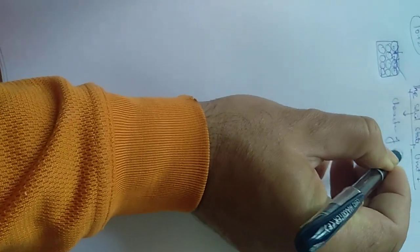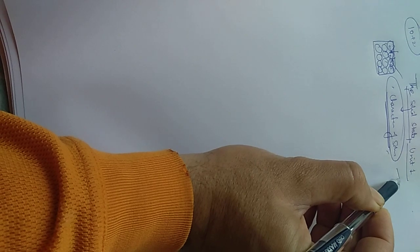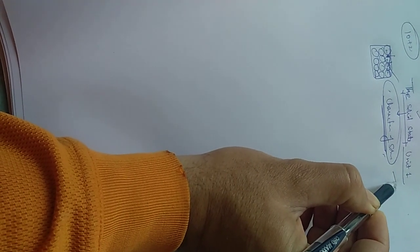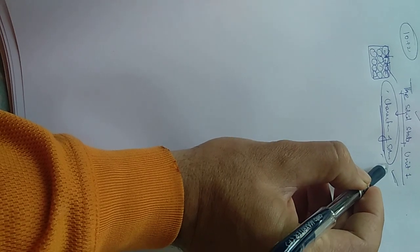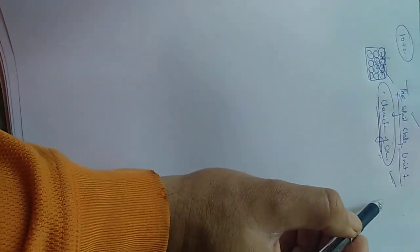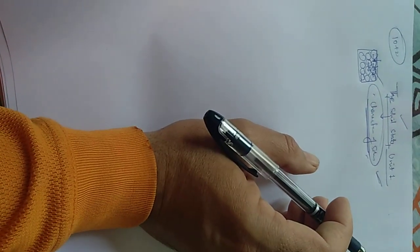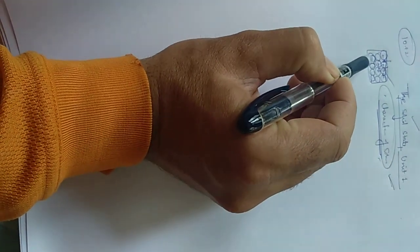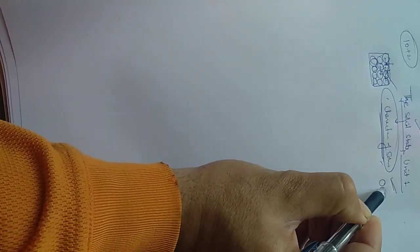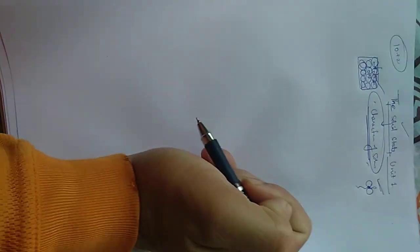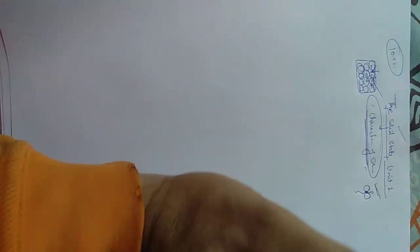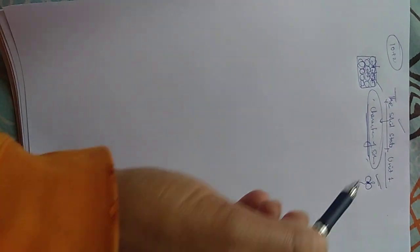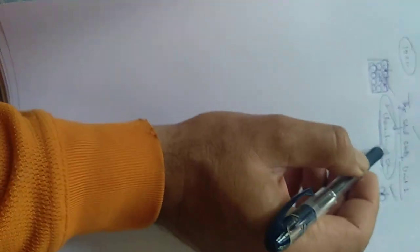The general characteristics of solids: First, they have a definite shape and volume. Second, the inter-molecular or inter-particular distance is very small. Third, the force of attraction between particles is very strong. Fourth, solids are incompressible — unlike gases where there is distance between particles that can be compressed.